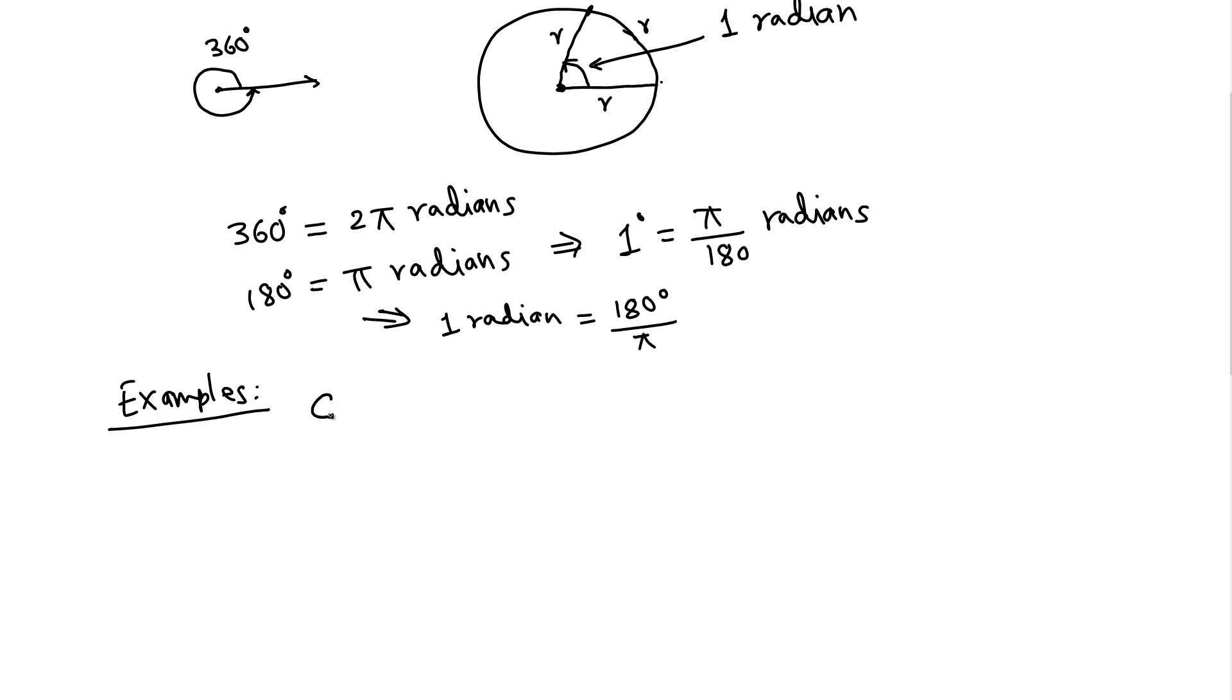Convert the following angles into radians. This is 60 degrees. To convert this into radians, we multiply 60 by π over 180.